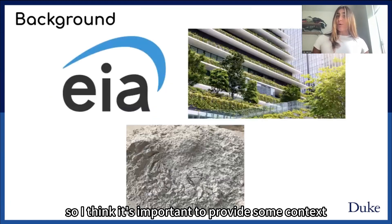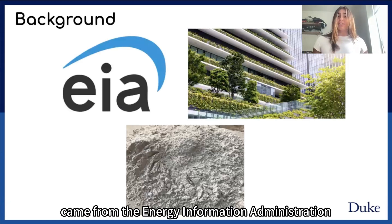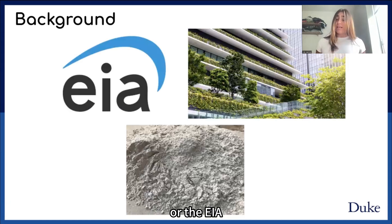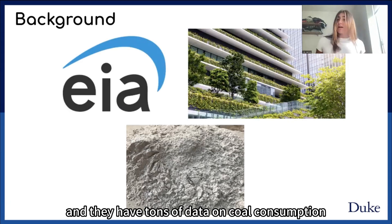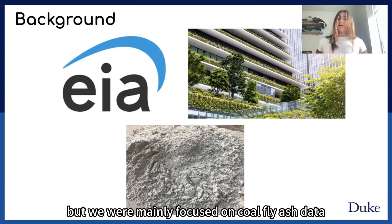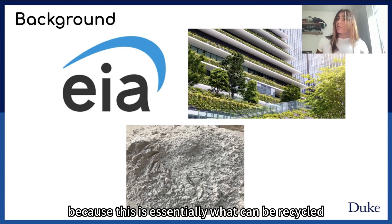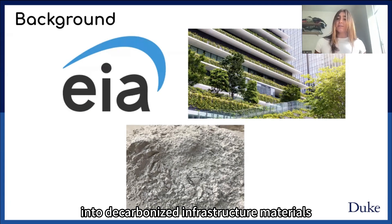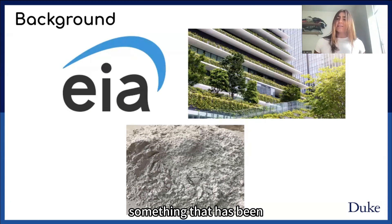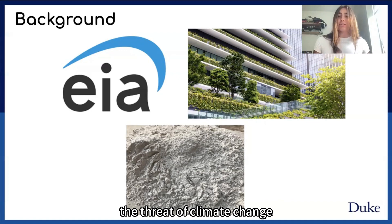It's important to provide some context. Most of our data came from the Energy Information Administration, or the EIA. They have tons of data on coal consumption starting in 1972 to the modern day, but we were mainly focused on coal fly ash data. This is important because this is essentially what can be recycled into decarbonized infrastructure materials, something that has been under greater interest due to the threat of climate change.